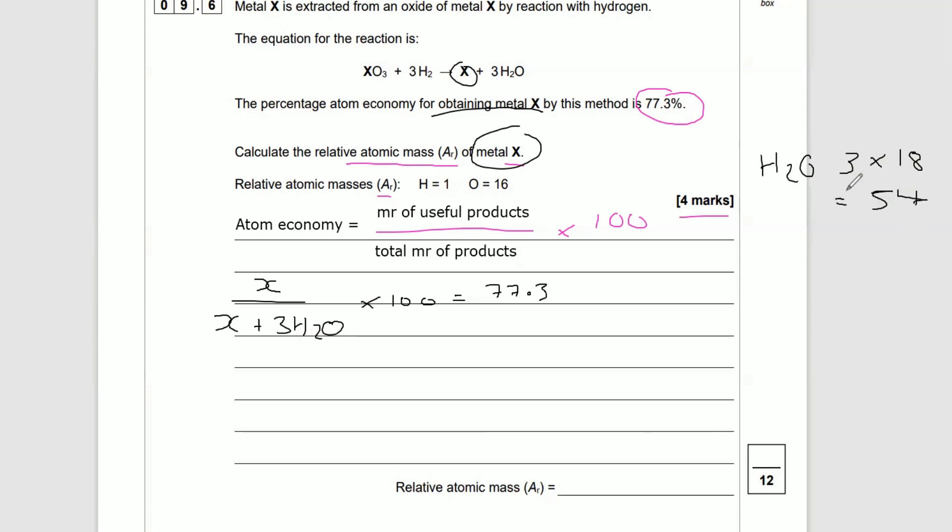So H2O equals... 3 times 18. 3 times 10 is 30, 3 times 8 is 24. That equals 54. So we can rewrite this with 3H2O as 54.